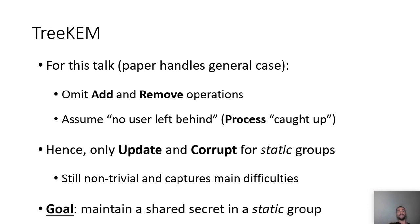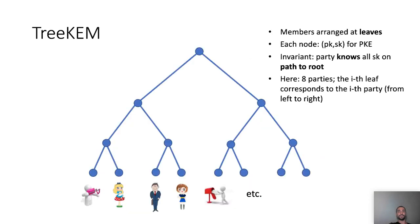The goal is to maintain a shared secret in a static group. TreeKEM uses a tree-based structure where group members are arranged at the leaves of the tree — here we have eight members. Each node consists of a public and secret key for public encryption, and the invariant is that parties know only the secret keys on the path to the root. So a given party knows the secret key for its leaf node, its parent, and so on up to the root. The root node is a special node. The i-th leaf corresponds to the i-th party from left to right.